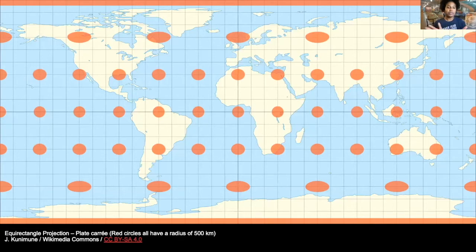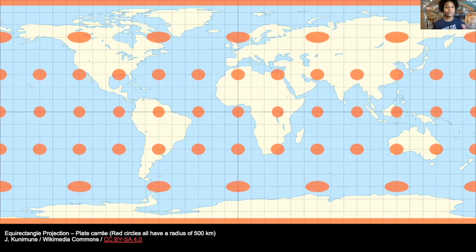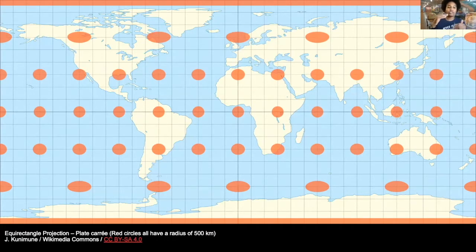To show another example, this projection — the Plate Carrée — is used across the world and is neither equal area nor conformal, so it's used for showing a global view. As you can see, as you move away from the equator, the circles become quite distorted.